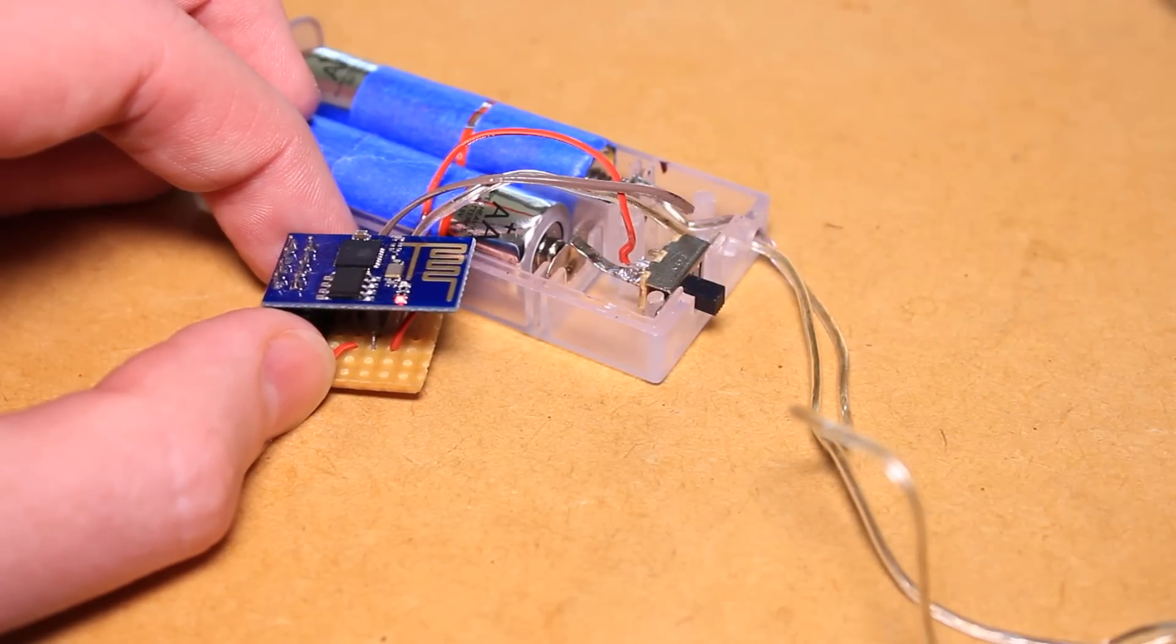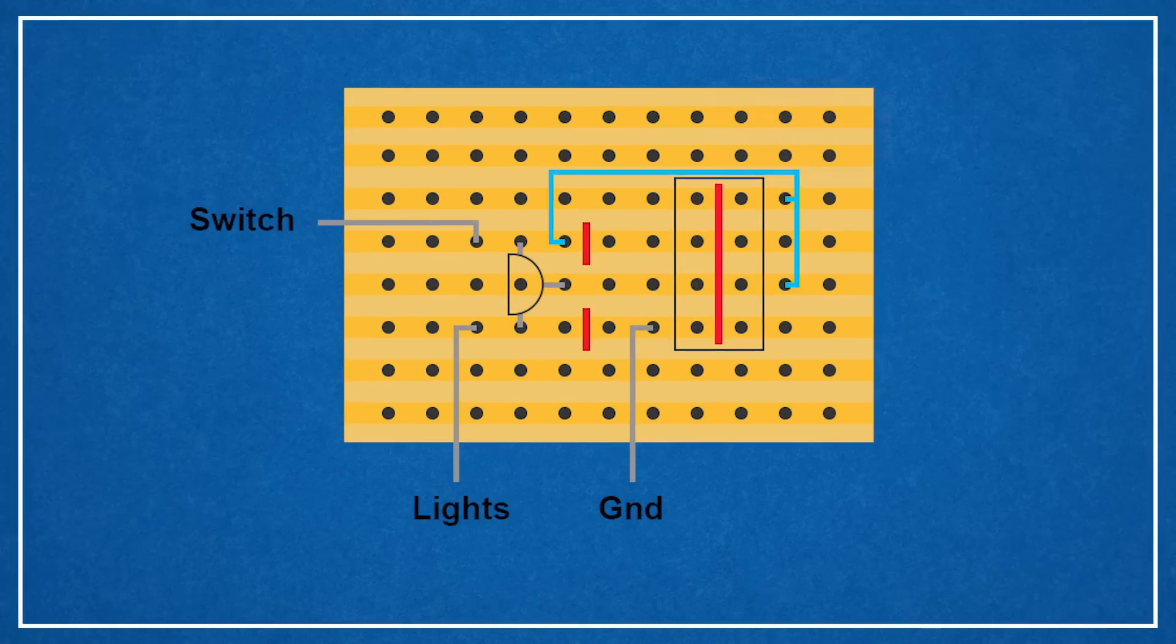In this circuit we are using the transistor as a switch, using GPIO2 of the ESP8266 module to trigger the switch.